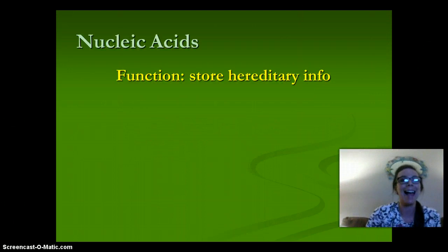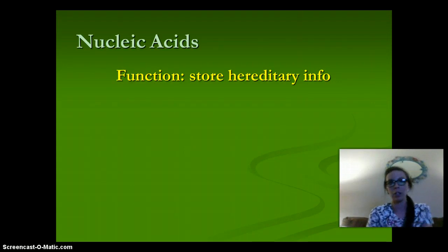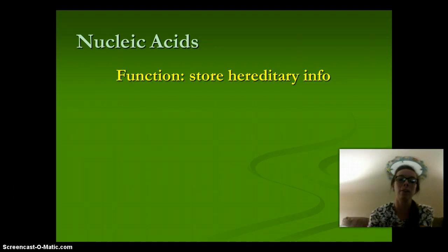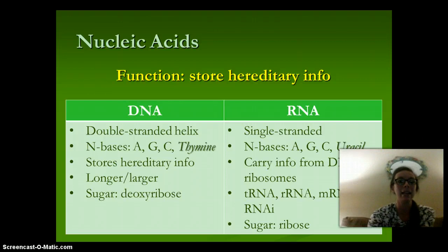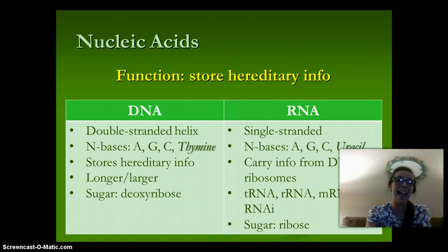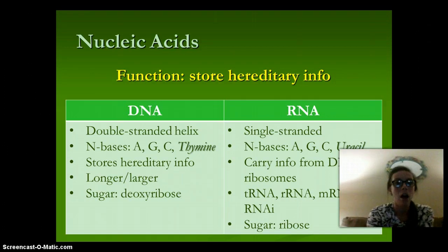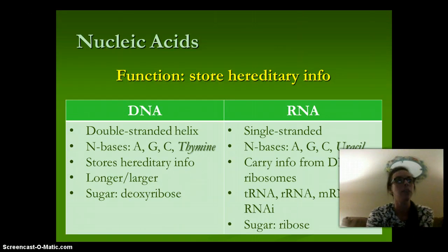Just to review, nucleic acids — we started this last lecture. Their function is to store the hereditary information of an organism, and they are DNA and RNA. DNA is a double-stranded helix. The nitrogen bases are A, G, C, and T. They store the hereditary information, they are longer and larger, and the sugar is deoxyribose.